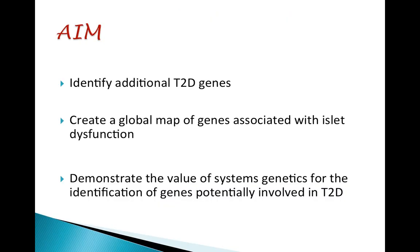The aim of this research is to identify additional type 2 diabetes genes by analyzing global gene expression in human islets from 63 donors, 9 of whom had type 2 diabetes. This research will produce a global map of genes associated with islet dysfunction and a ranked list of potential type 2 diabetes genes. In doing so, it will also demonstrate the value of systems genetics for the identification of genes potentially involved in type 2 diabetes.